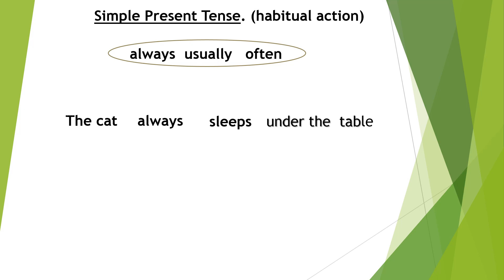Next sentence: 'They often eat bread.' The subject is 'they'. Write your subject, then the verb — 'eat'. Don't forget, because we use the word 'always/usually/often', you have to write it in between the subject and the verb.